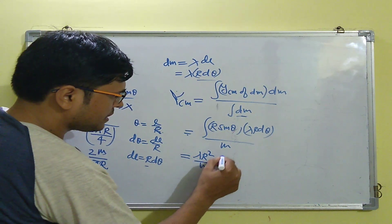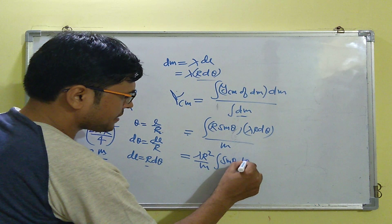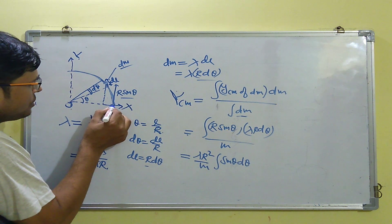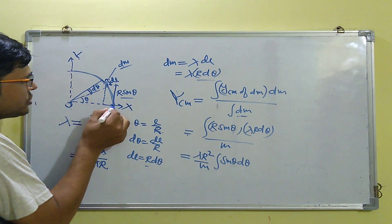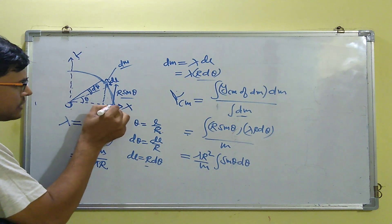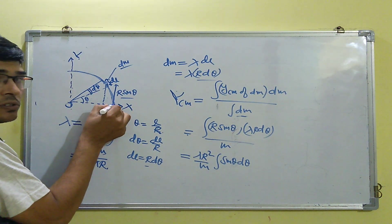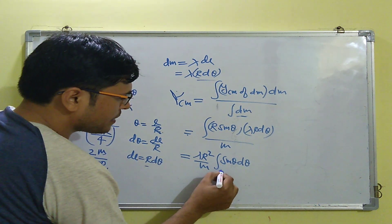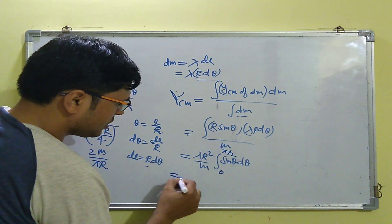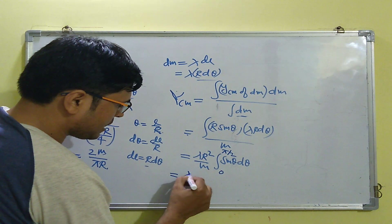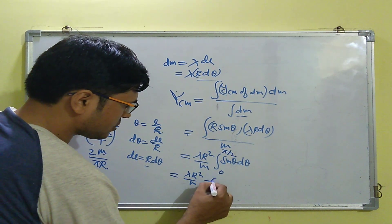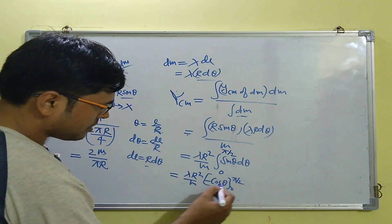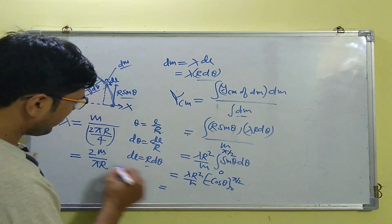The first element is formed at θ = 0 and the last at θ = π/2, so we integrate from 0 to π/2. This gives λr²/m · [−cosθ] from 0 to π/2, which evaluates to λr²/m · 1.